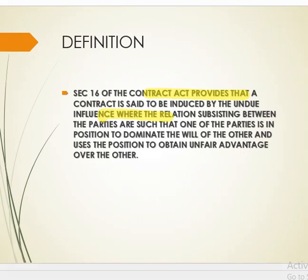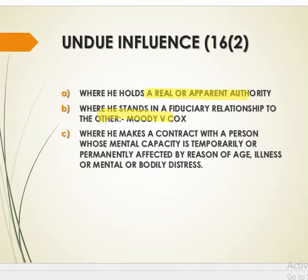For example, a doctor while treating a patient — because while taking treatment from the doctor, the patient is under the influence of the doctor. If the patient gifted all the property to the doctor, it is a case of undue influence. Undue influence is suspected where one party holds a real or apparent authority over the other.